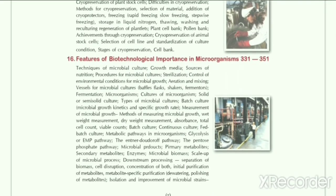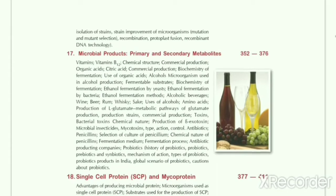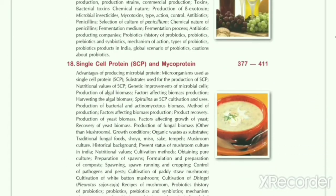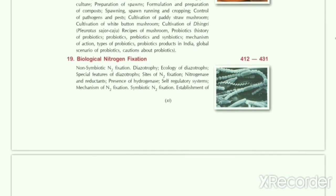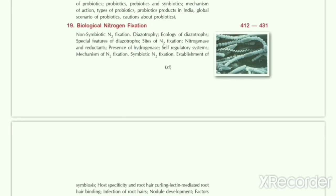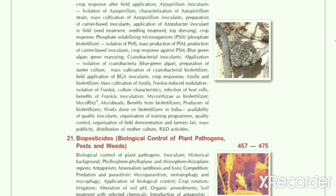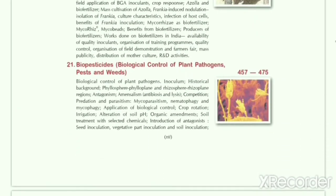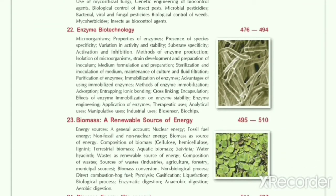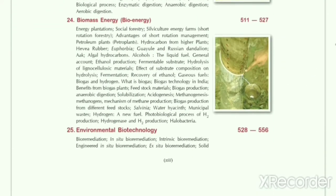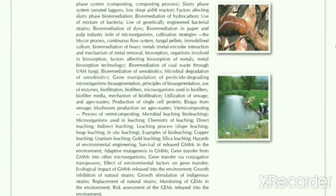Chapter 2: Genes — Nature, Concept and Synthesis. Chemical Nature of DNA: Chemical Composition, Nucleotides, Nucleosides, Polynucleotides, Chargaff's Rule of Equivalence. Physical Nature of DNA: Watson and Crick's Model of DNA, Circular and Superhelical DNA, Organization of DNA in Eukaryotes. Structure of RNA.